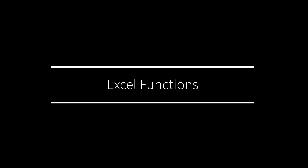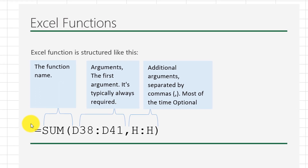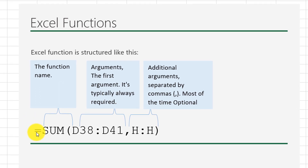Now let's look at Microsoft Excel functions. Functions are a little bit different from formulas, but they have a lot of similarity. You still need to type an equal sign, then type the name of the function. Then typically you have mandatory arguments, which can be either a cell reference, a value, or a range. And then you have a list of optional values.